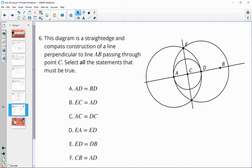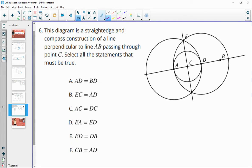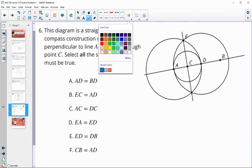Number six: this diagram is created with a compass and straight edge where we have a line perpendicular to AB passing through point C. We had started with line AB and drew a perpendicular line through C. Select all statements that must be true. Option A: is AD equal to BD? That's false because B isn't on the edge of that circle, so definitely not both radii.